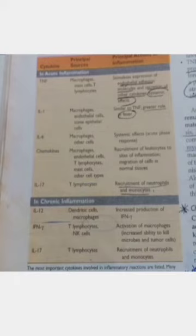Interleukin-1 is basically similar to tumor necrosis factors and has a major role in fever and the systemic acute phase response. Interleukin-6 also has a systemic effect and is involved in the acute phase response.